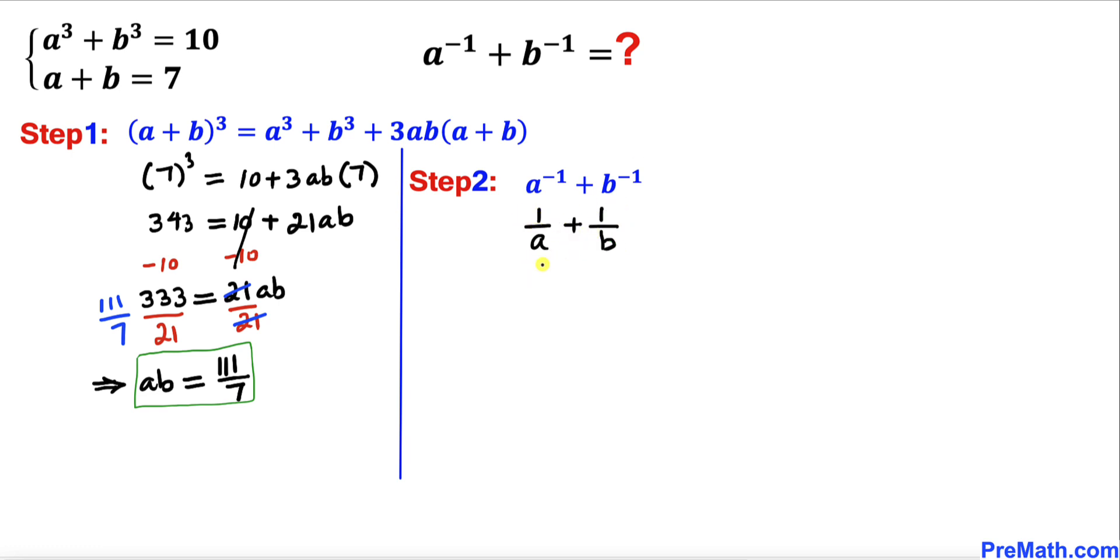Let's go ahead and cross multiply: 1 × b is b, plus 1 × a is a, so I can write (a + b) divided by ab.